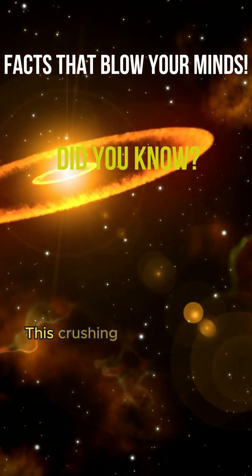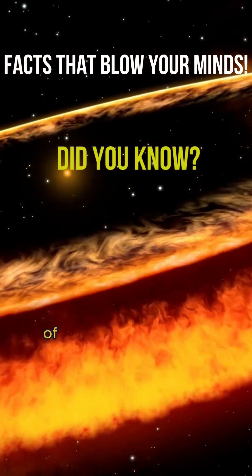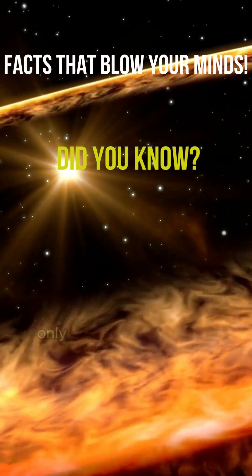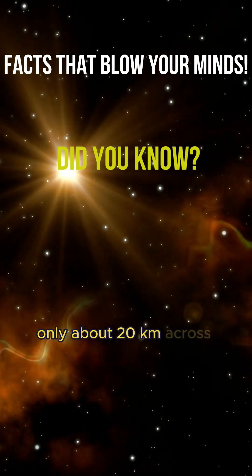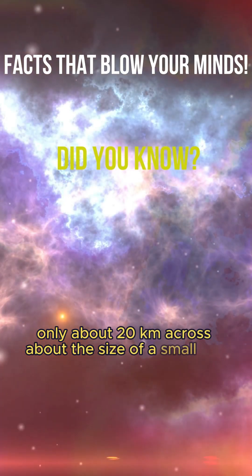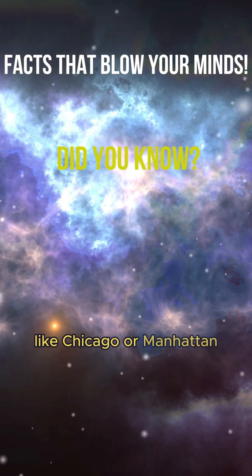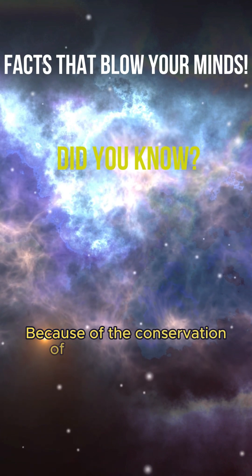This crushing process packs more than the mass of our entire sun into a sphere only about 20 kilometers across, about the size of a small city like Chicago or Manhattan. Because of the conservation of angular momentum, the massive star's rotation is dramatically sped up as it shrinks.